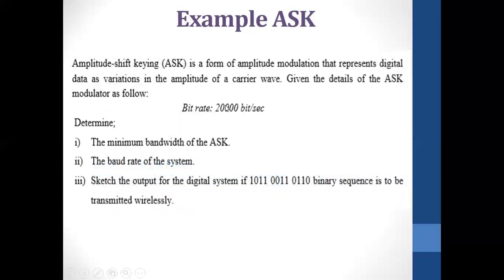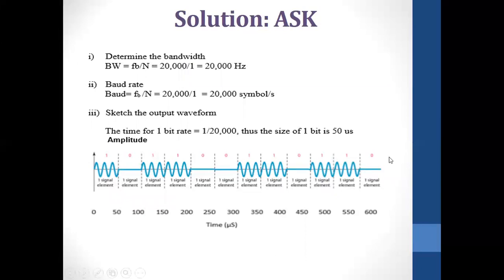To draw the output waveform, we first find the bit duration: TB = 1 / (20,000) = 50 microseconds. The X-axis is time in microseconds and the Y-axis is voltage level. The time intervals are 50, 100, 150 microseconds and so on — each 50 microseconds wide. The first bit is one, so the carrier is shown for that interval; zero means no carrier; then one means carrier again, and so on. Each signal element represents one bit.